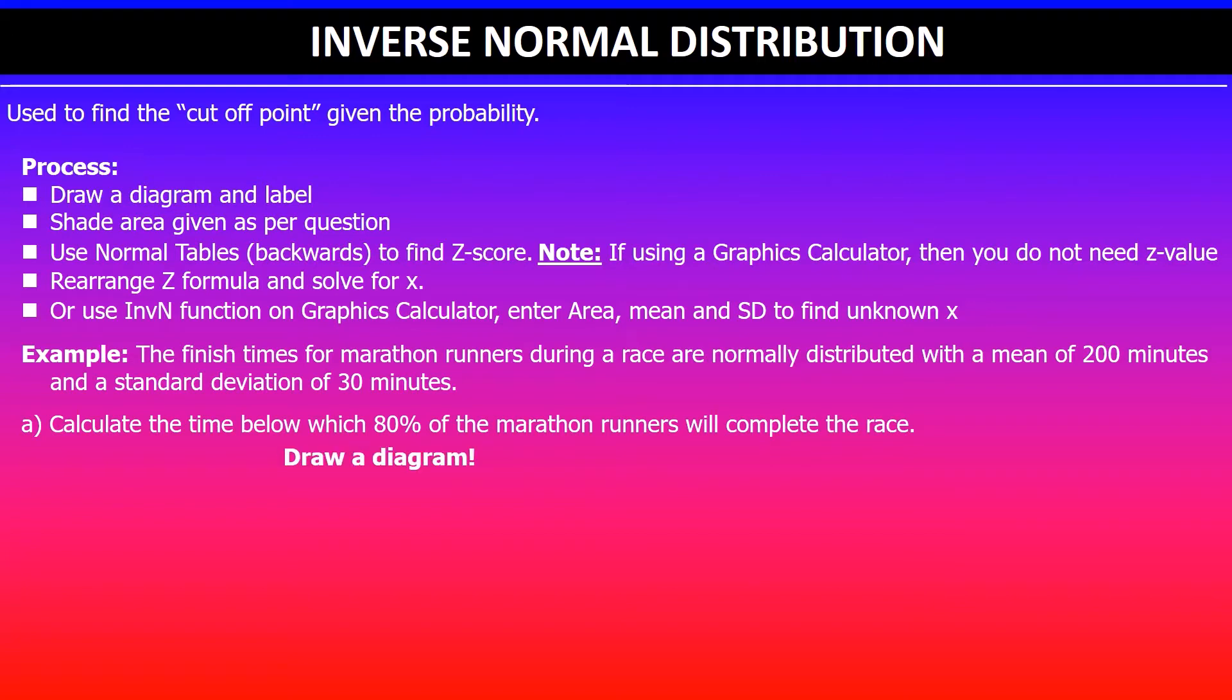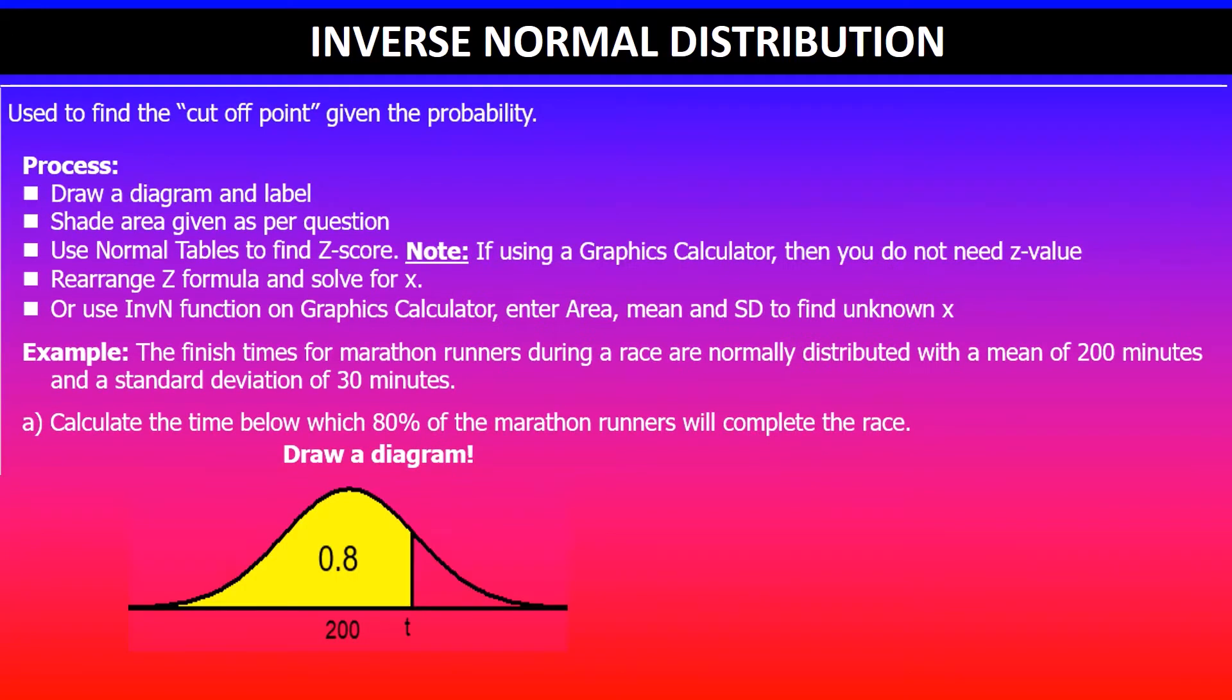We will begin by drawing a diagram. You can see that I've got 80% that's shaded, and below means you will pick the unknown time value. 80% means your shade is on the left hand side.